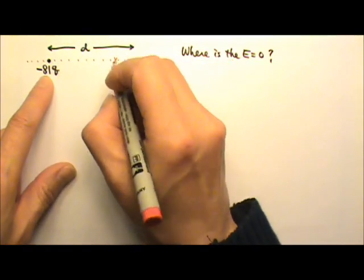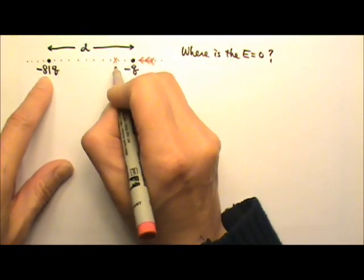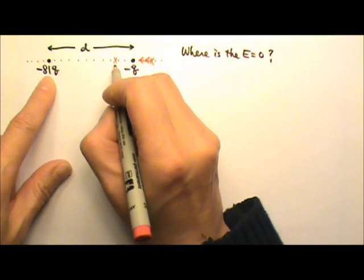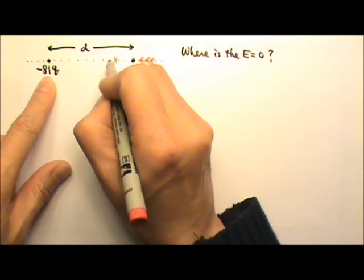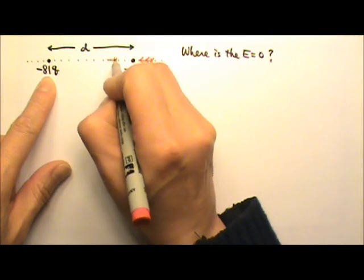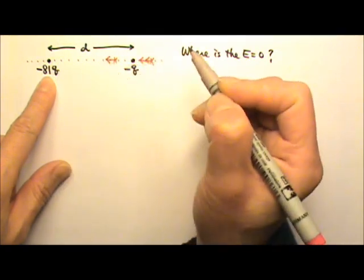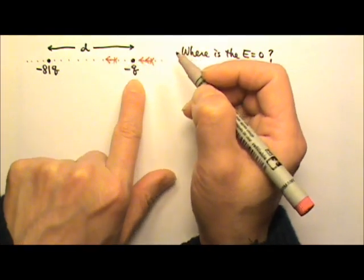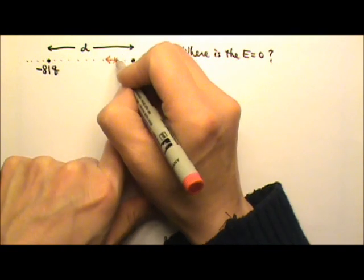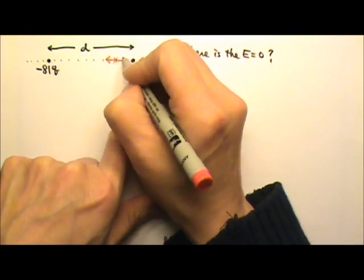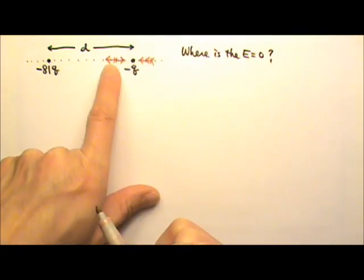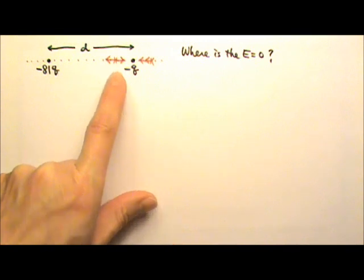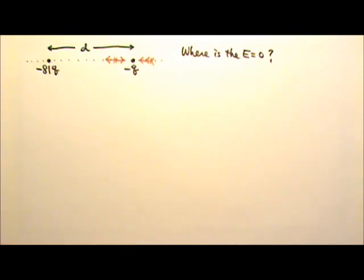The location in between the two charges will work, because the field produced by the negative 81q goes into that charge, and the field produced by the negative q goes into that charge — they are opposite, so they have a chance to cancel.